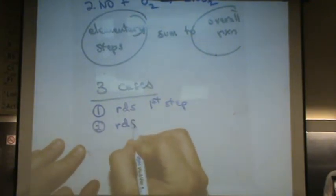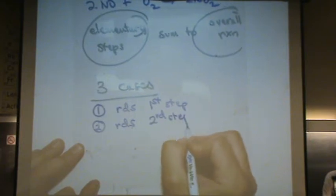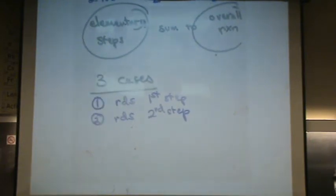Two, if the RDS, the rate determining step, is the second step. If it's the second step, that's solved a totally different way. Versus if it's the first step.